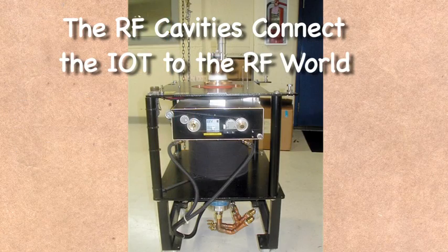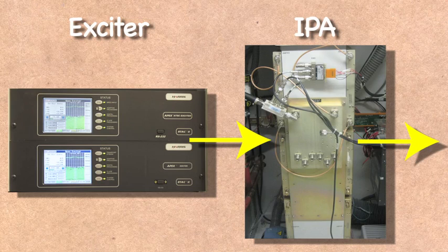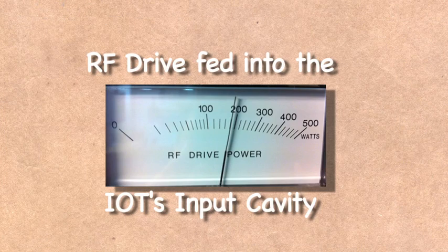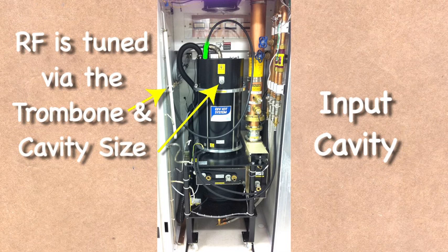Together, they connect the IoT with the RF world. Coming from the exciter and amplified by IPAs, approximately 200 watts of RF is fed to the input cavity, which is tuned for resonance and impedance matching at the operating frequency.